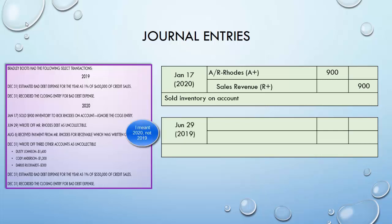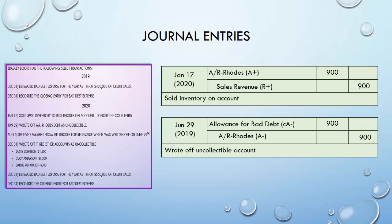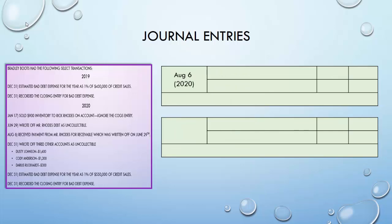On June 29th, Mr. Rhodes still has not paid Bradley Boots, so they're going to assume they'll never see that $900 and write it off. When they write it off, they take the money out of the allowance they created — they expected some credit sales to be uncollectible, and they're assuming this one is. So they debit Allowance for Bad Debt and credit AR–Rhodes for $900 to take the receivable off the books.